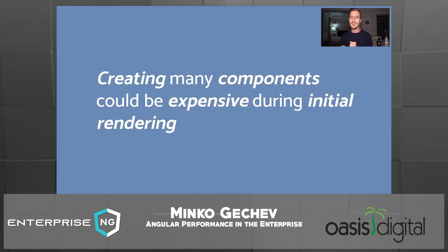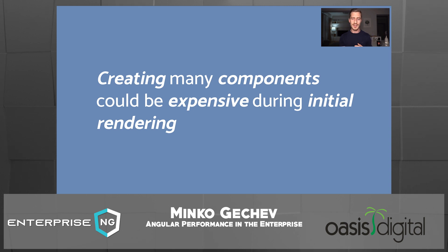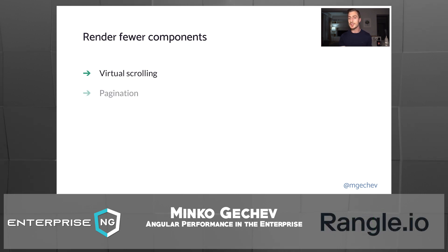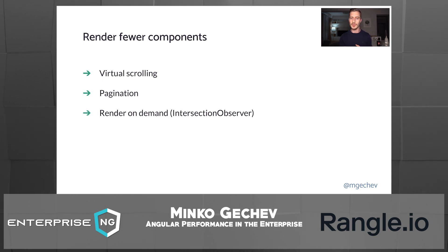However, keep in mind that this could bring improvements during change detection, but not necessarily at initial rendering. Angular will still have to render all the components, and the more components we have, the slower the rendering would be. The way to fix this is to render fewer components. Virtual scrolling is a way to achieve this — if we have thousands of items in a list, virtual scrolling could help us render fewer components. Pagination is clearly another alternative. A more advanced strategy is implementing on-demand rendering depending on what is currently visible in the viewport, for which we can use the Intersection Observer API.